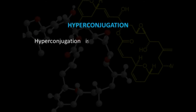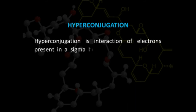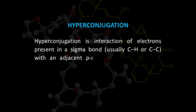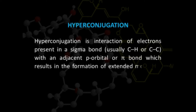Hyperconjugation is the interaction of electrons present in a sigma bond—usually carbon-hydrogen or carbon-carbon—with an adjacent p orbital or pi bond, which results in the formation of an extended molecular orbital.